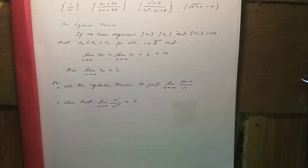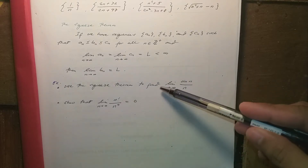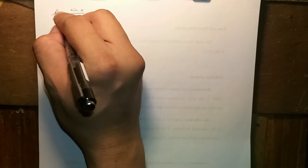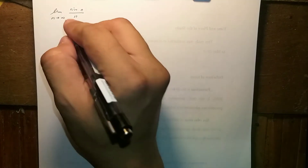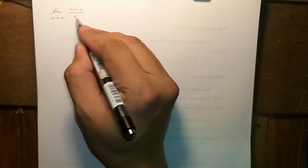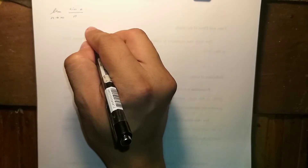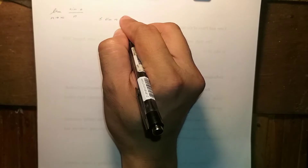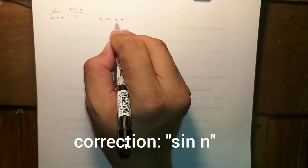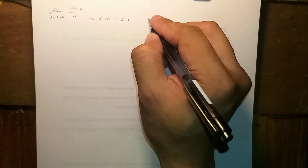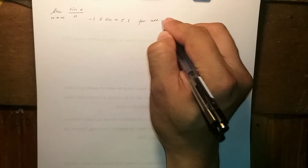We will use the Squeeze Theorem to evaluate two examples. For the first example, we evaluate the limit of sin(n) over n as n approaches infinity. We know that sin(x) is always between -1 and 1, so the possible value of sin(x) must be between -1 and 1 for all n.